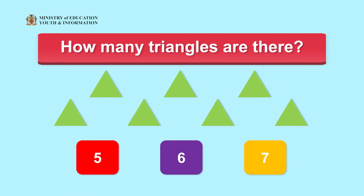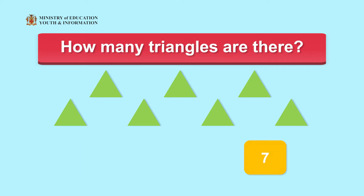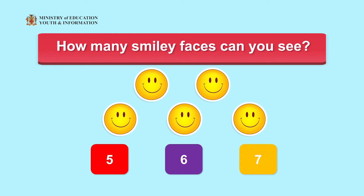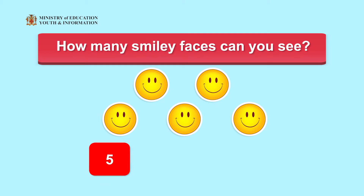Here are some triangles. How many triangles are there? Which number tells how many triangles are there? Is it the number 5, 6, or 7? Awesome! There are 7 triangles. Here is the number 7. How many smiley faces can you see? Which number tells how many smiley faces are there? Is it the number 5, 6, or 7? Did you say 5 or did you say 6? There are 5 smiley faces. Here is the number 5.